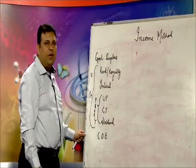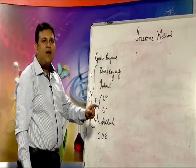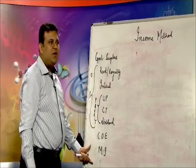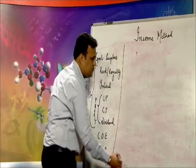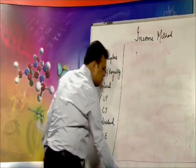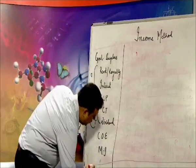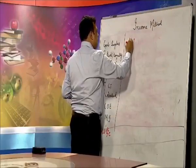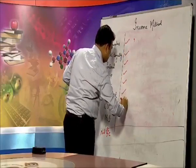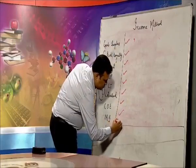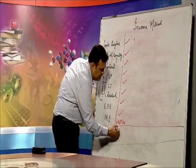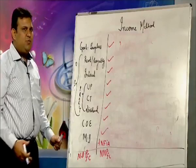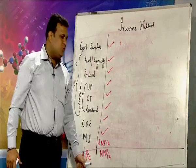People also earn compensation of employees — cash, kind, social security benefit, and retirement pension. Then people have mixed income. This is domestic income, NDP at FC. If I add NFIA to domestic income, it becomes national income, NNP at FC. Domestic income plus NFIA equals national income.